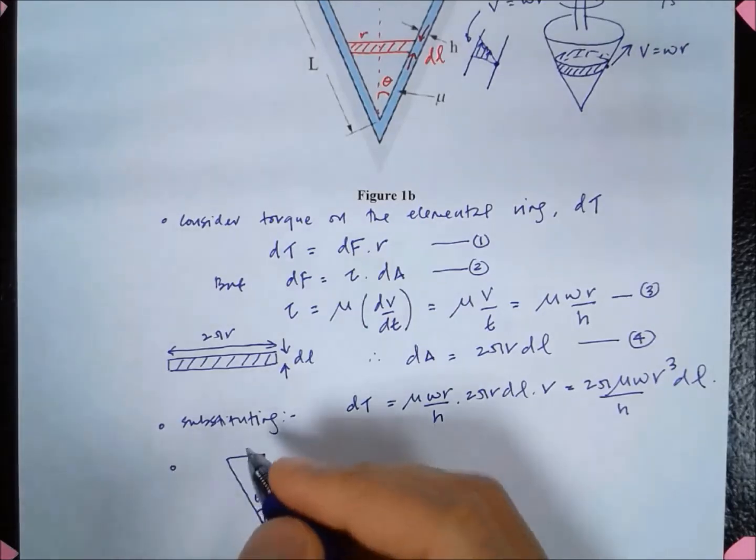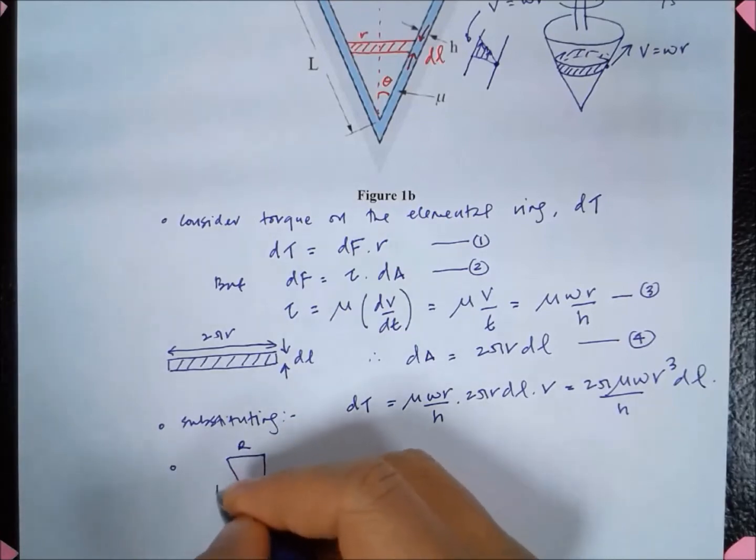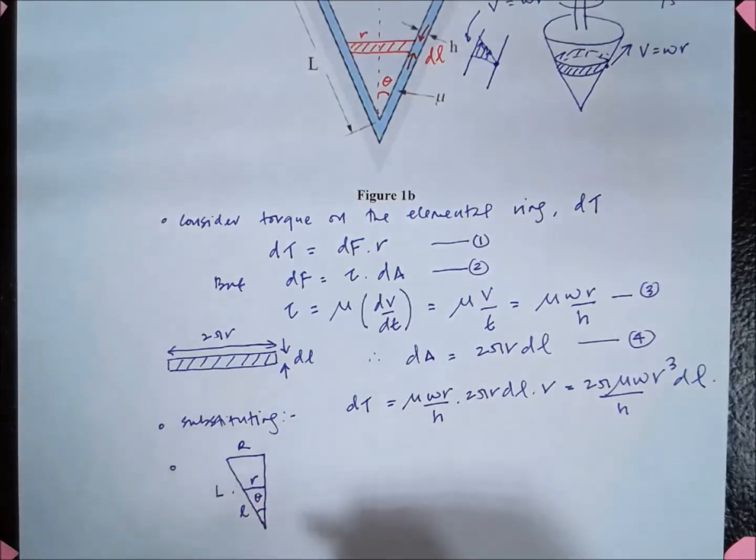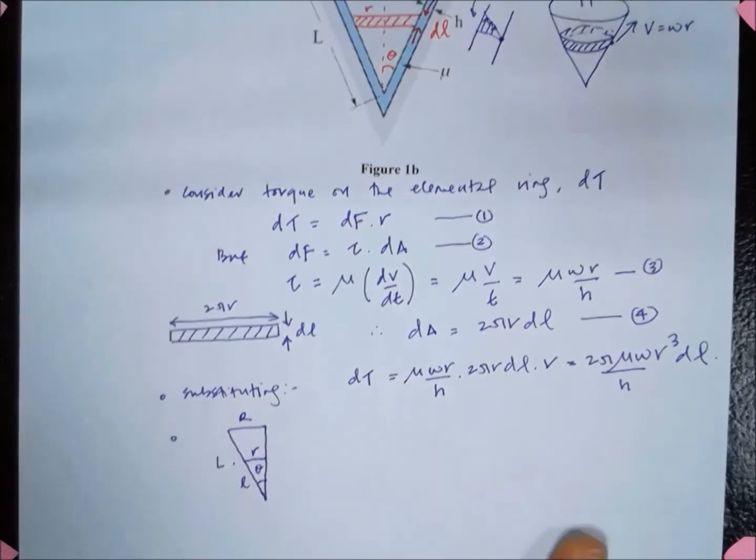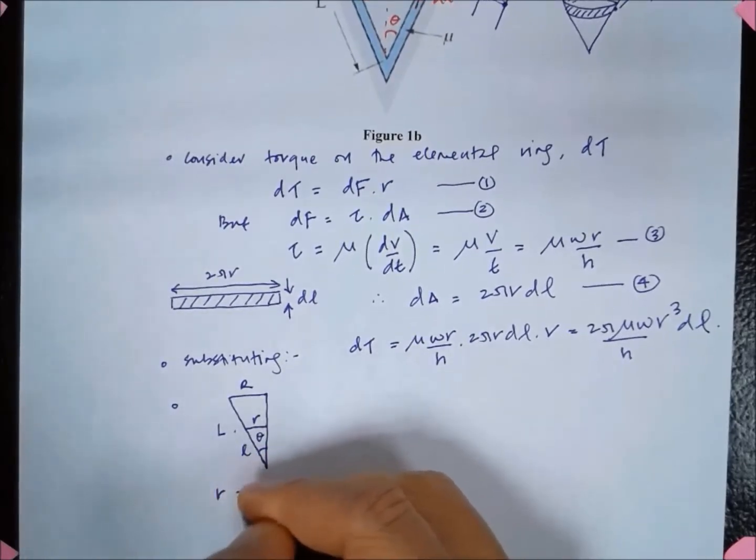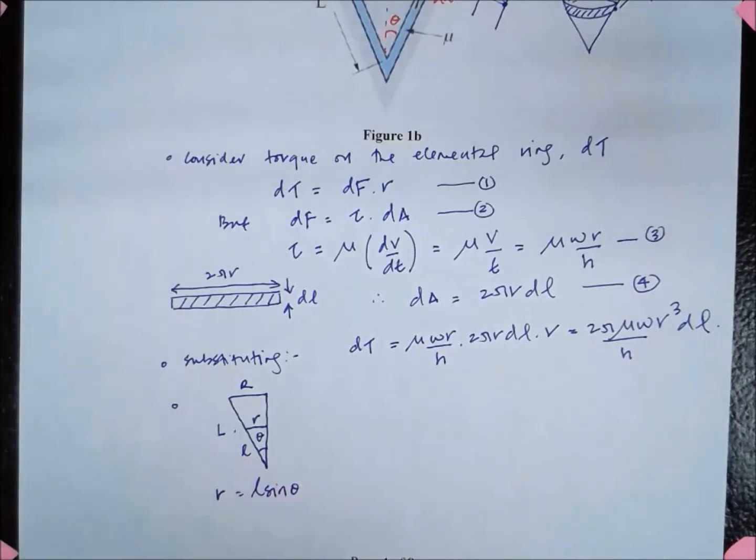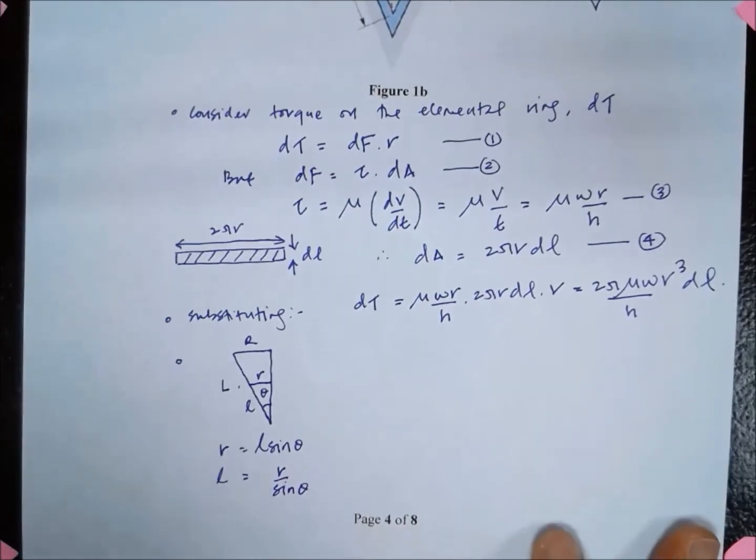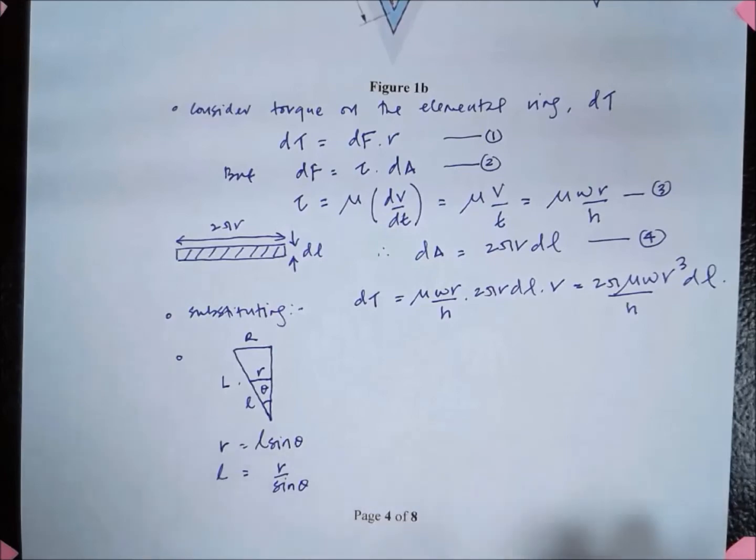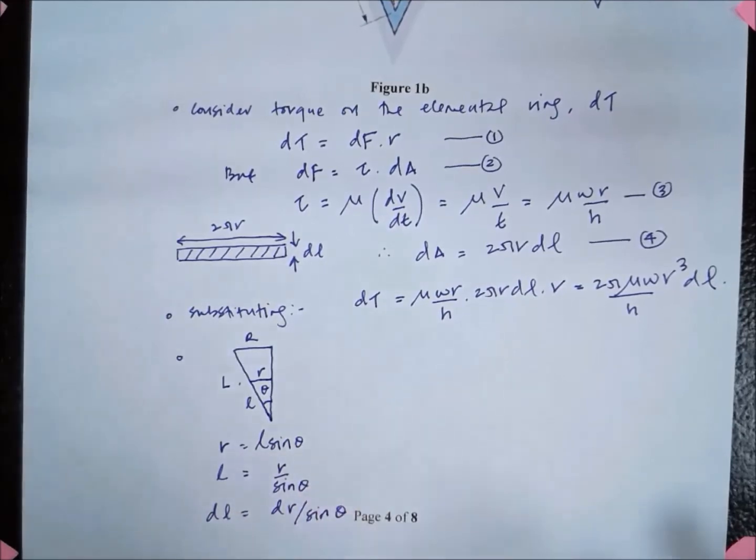If we draw this, this is my theta, this is big R, this is r, this is L, and this will be my r, and from here to here is l. So I can write the relationship between r and l as basically r equals l sine theta. So if I want to get l, l is r over sine theta. Hence if I differentiate that, I have dl is dr over sine theta.